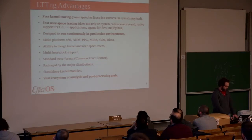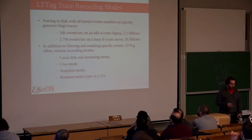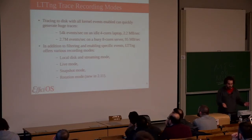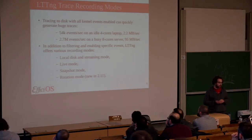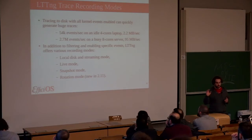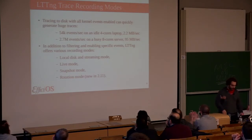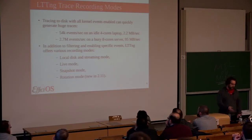LTTng is filled with a lot of tools for post-processing traces, both batch and graphical — we will see some examples later. LTTng can generate a lot of events. If you configure the default kernel tracing on a laptop doing nothing, you can generate about 4,000 events per second. On a busy server running the same configuration, it will generate 2.7 million events per second — that's 95 megabytes of trace per second. So the default mode is maybe not for everyone, and that's why we have other modes.